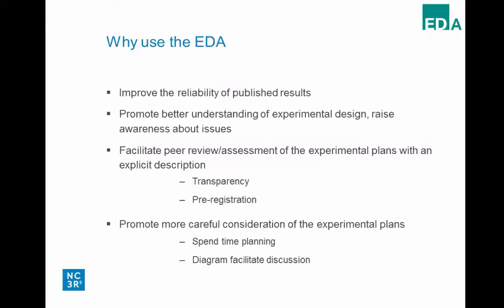Why would you use the EDA? First, to improve the reliability of published results by addressing obvious sources of bias. The EDA also promotes better understanding of experimental design and awareness of why these issues are important — every time you get feedback from the system, you learn something new. The EDA is not a black box telling you how to do things; it highlights the implications of doing things certain ways so that you can make an informed decision. It also facilitates assessment of the experimental plan — at the level of grant application, ethical review, manuscript submission, or for journal readers — and can be used as a form of pre-registration.